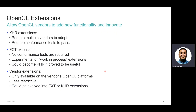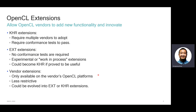OpenCL extensions is a mechanism to allow OpenCL vendors to add new functionality and innovate. There are a few different types of extensions. First is the KHR extension, which requires multiple vendors to adopt and also requires conformance tests to pass. There's the EXT extension, which is more experimental or work-in-progress and could become a KHR if proven useful. Finally, there is the vendor extension, which is only available on the vendor's OpenCL platform. It's much less restrictive and could also become a KHR extension if more vendors adopt it.